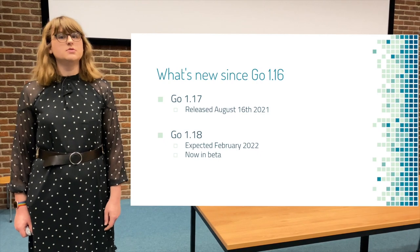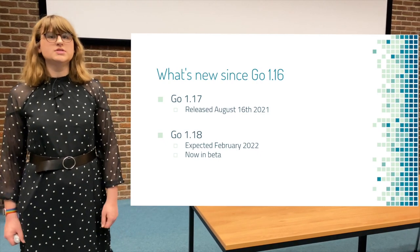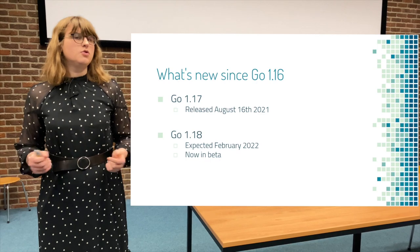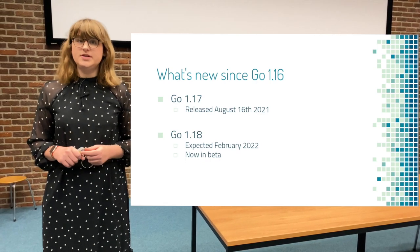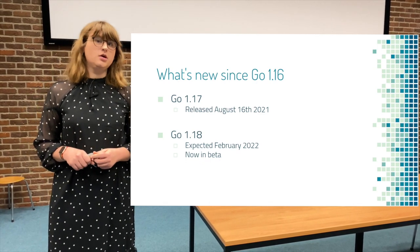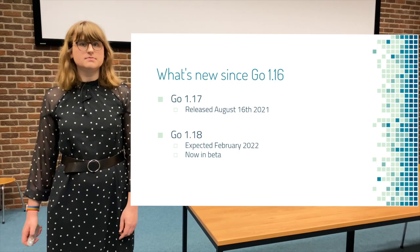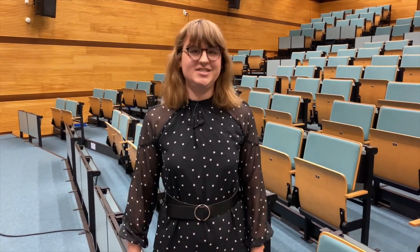What's new since Go 1.16? Well, Go 1.17 was released in August of 2021, and Go 1.18 is expected to be released in February of 2022, and at the time of recording is in beta. First, we're going to look at changes to the language. There have been a few minor tweaks to the language this edition, but there is one I want to talk about today: Go 1.18 finally has generics.